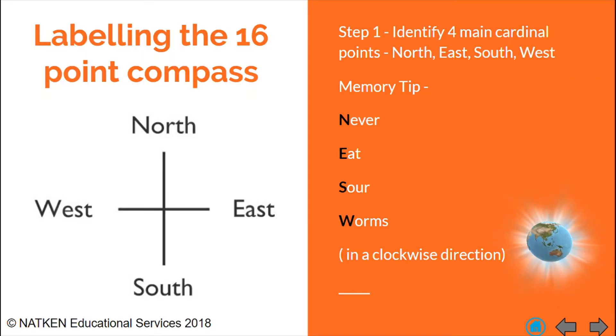The first thing we're going to do when we're looking at the 16-point compass is we are going to look at our four-point compass first of all. So the four-point compass comprises of the main cardinal points which are north, east, south and west.